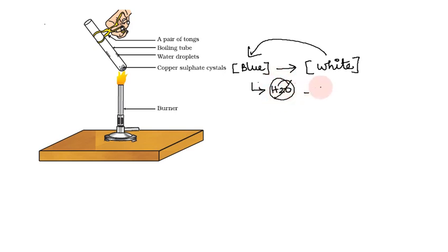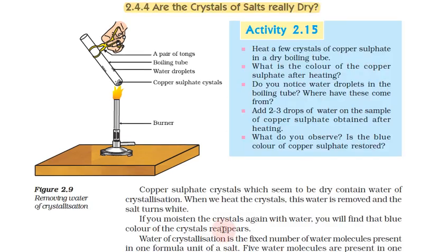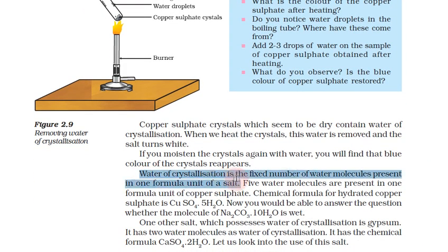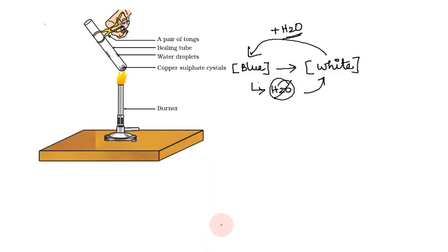H2O removed gives white color, and H2O added gives blue color. So from this activity we will know what water of crystallization is. A fixed number of water molecules is present in one formula unit of salt — this is called water of crystallization.